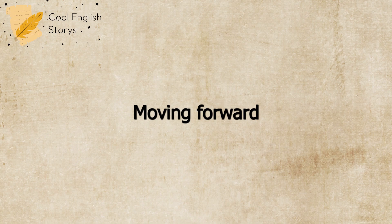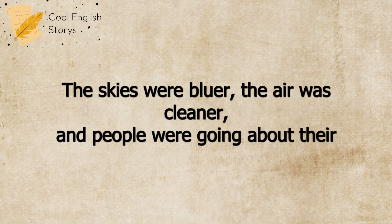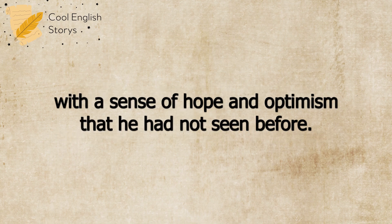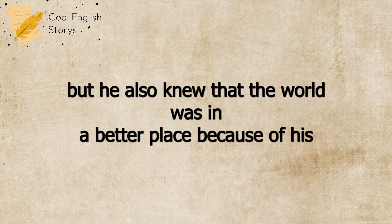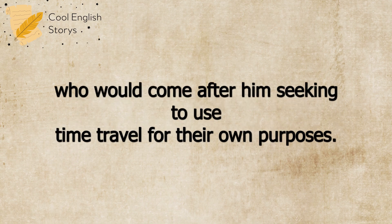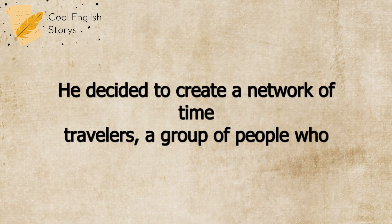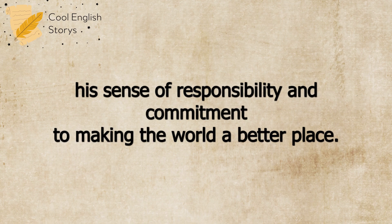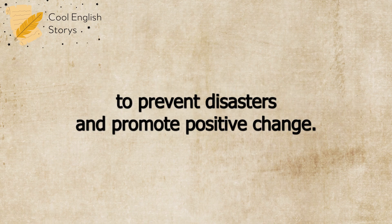Chapter 6: Moving Forward. The Time Traveler took a deep breath and looked around at the world that he had helped to save. The skies were bluer, the air was cleaner, and people were going about their lives with a sense of hope and optimism that he had not seen before. He knew that there were still challenges ahead, but he also knew that the world was in a better place because of his actions. He had learned a great deal about the power of time travel, and the importance of responsibility and accountability when wielding that power. As he thought about the future, he knew that there would be others who would come after him, seeking to use time travel for their own purposes. He decided to create a network of time travelers — a group of people who shared his sense of responsibility and commitment to making the world a better place. They would work together, using their knowledge and experience to prevent disasters and promote positive change.